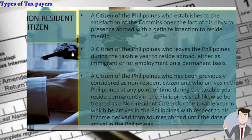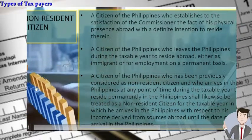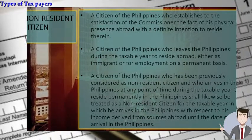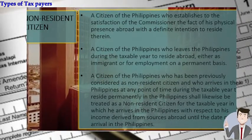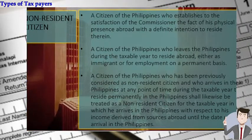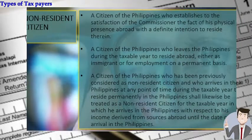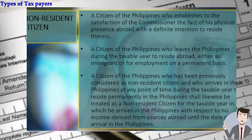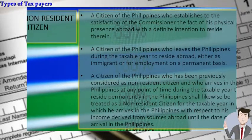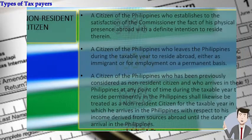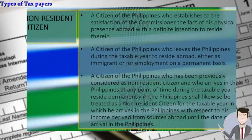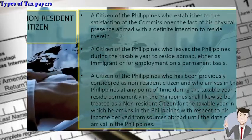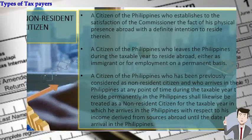Third, a citizen previously considered non-resident who arrives in the Philippines at any point during the taxable year to reside permanently shall still be treated as a non-resident citizen for that taxable year. For example, if someone returns in 2021 with the intention to permanently reside here, they are still considered non-resident for 2021. They will only be considered resident citizen the following year.